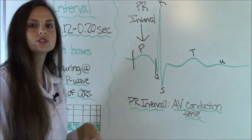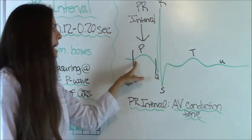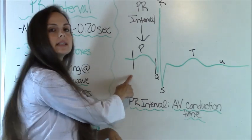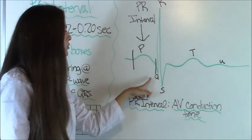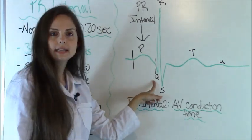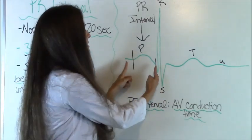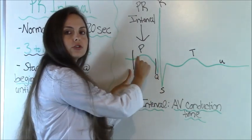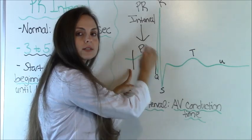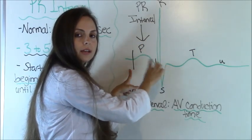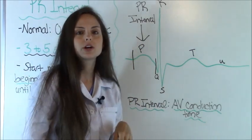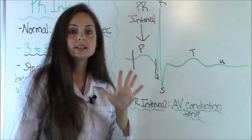So when you measure the PR interval, you're going to start at the beginning of the P wave, which is represented by this line here. And you're going to stop at the beginning of where the QRS starts. So you'll be measuring from here to here. And when you're measuring, you're looking at your small blocks, which is the background blocks behind the EKG strip, and making sure that it measures between 3 to 5 blocks.